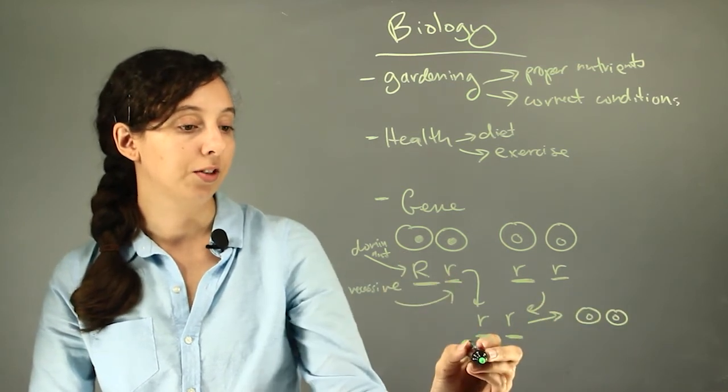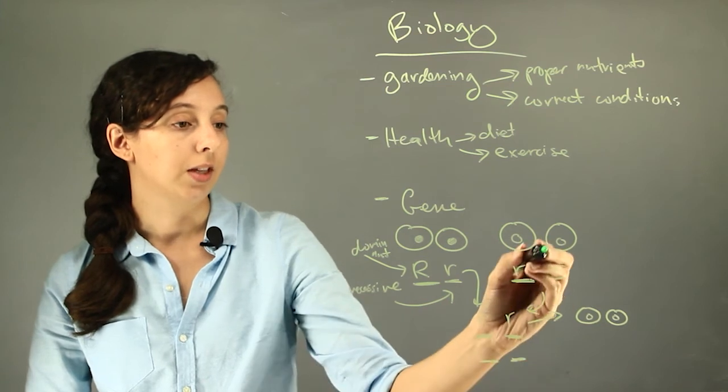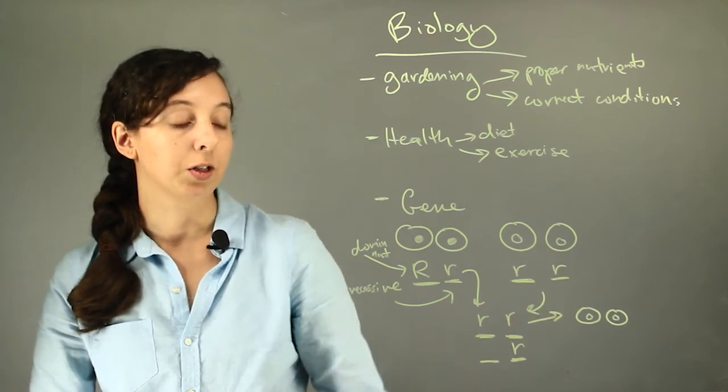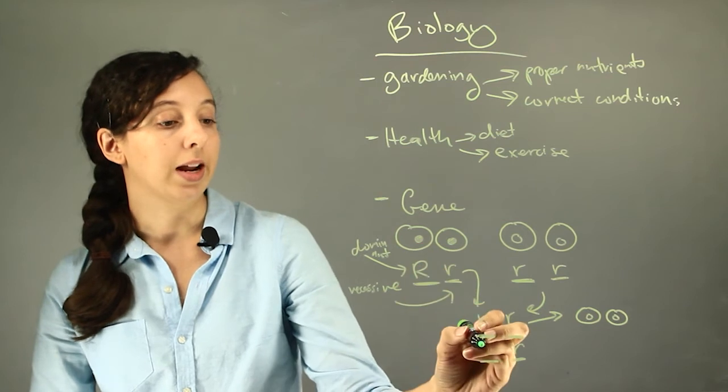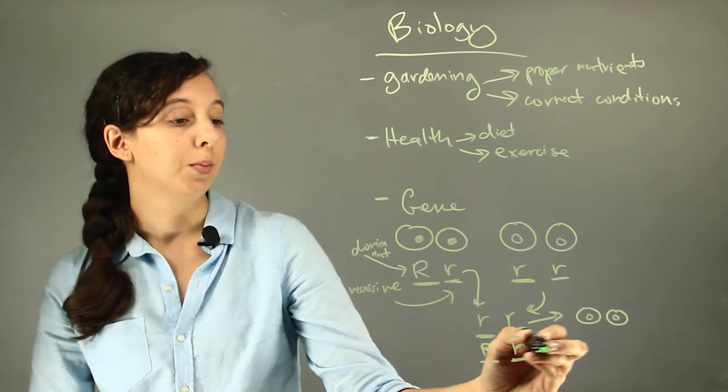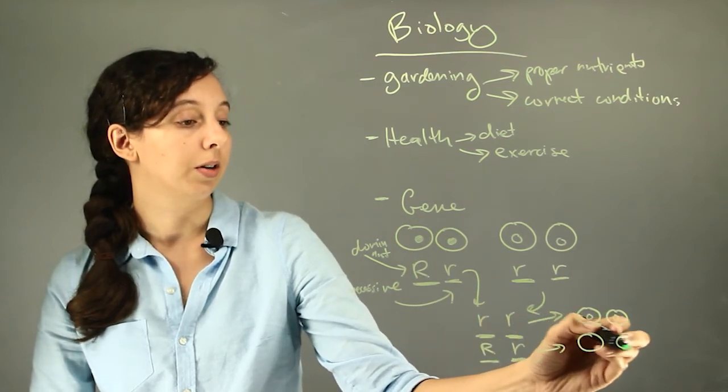But let's say they have another kid a few years later, again they can only get a lowercase from this parent and let's say this time they get the uppercase R so they're going to get brown genes and they're going to have brown eyes.